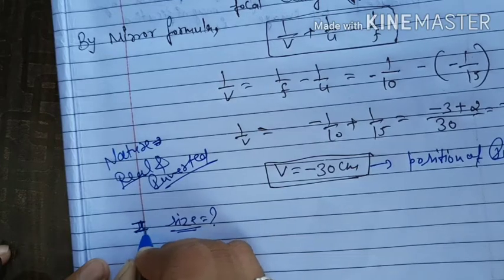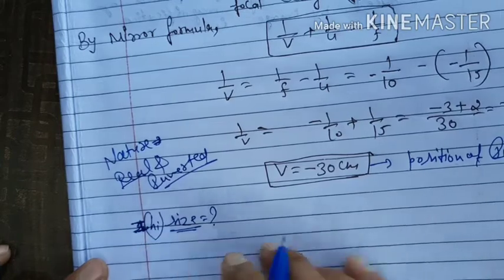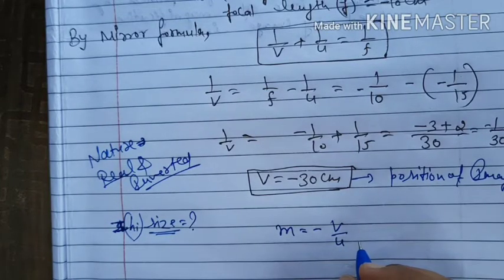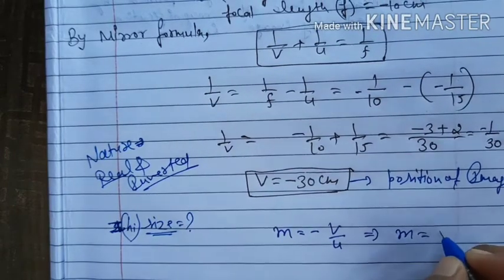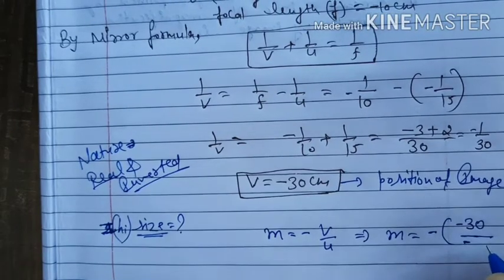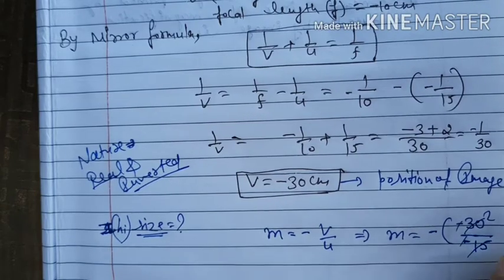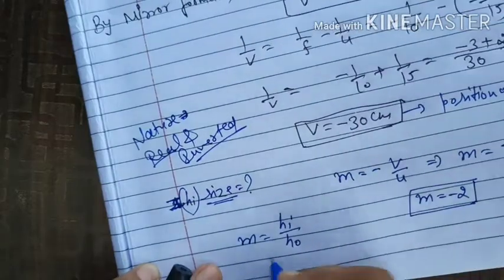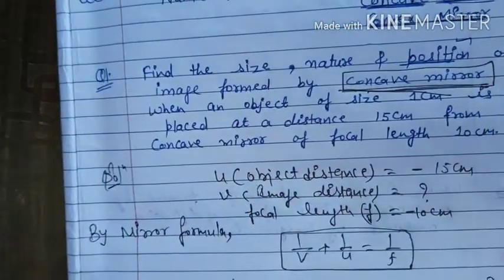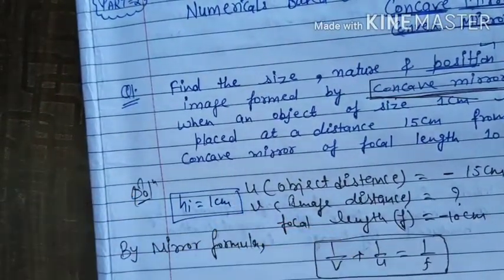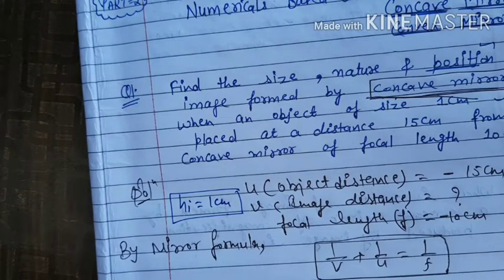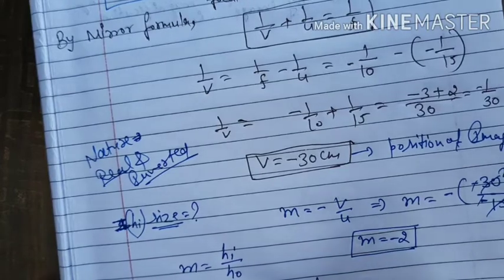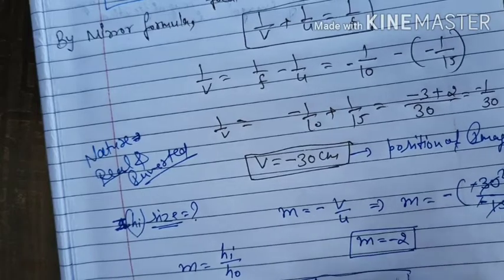Now for the size of the image, we use magnification: m = −v/u = −(−30)/(−15) = −2. We also know m = hi/ho. Since ho is 1 cm, we get hi = −2 centimeters. So the height of the image is minus 2 centimeters — it is inverted and twice the size of the object.